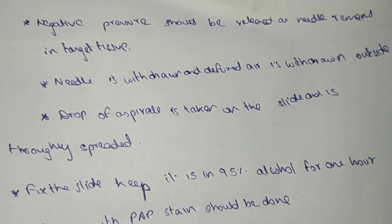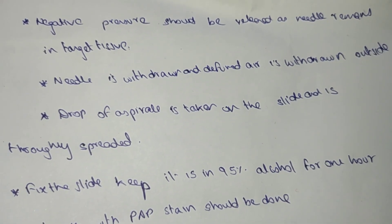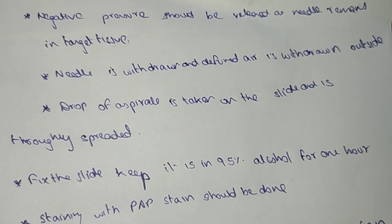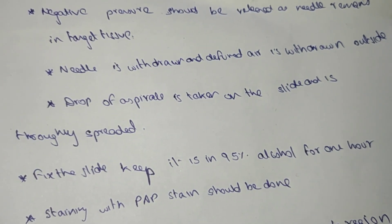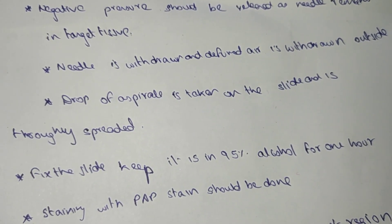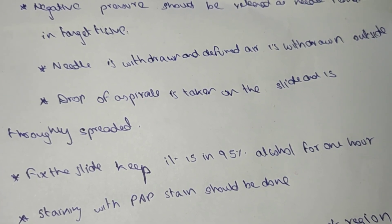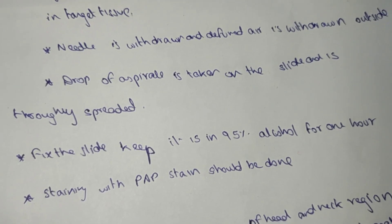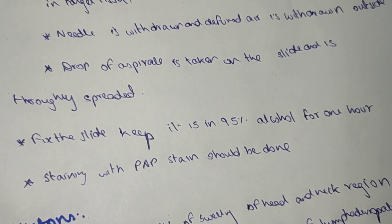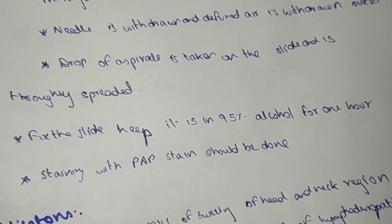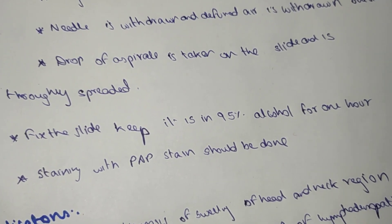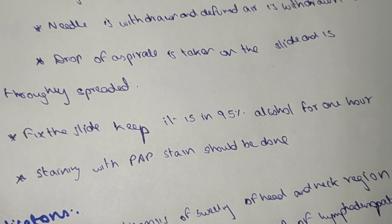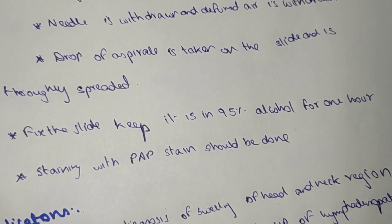The needle is then withdrawn. A drop of aspirate is taken on a slide, and the slide is fixed with 95% alcohol. Staining with PAP stain should then be done.